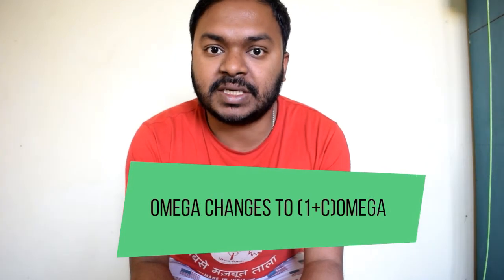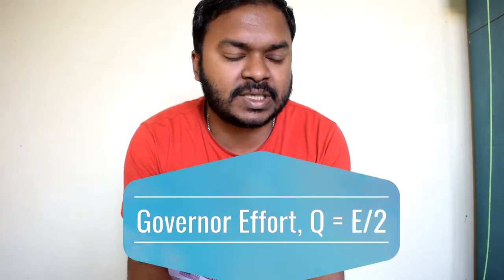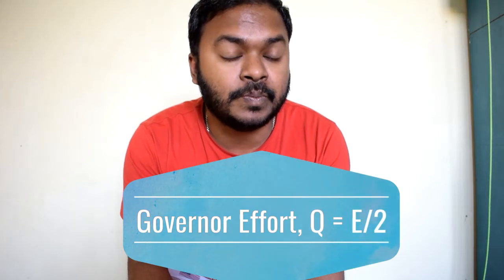In this derivation, we will equate the two equations of height even after increment of speed from ω to (1+C)ω. Since the height remains the same even after increment of the speed, we will equate the equation and try to find out the governor effort equation Q in terms of E/2. Since Q equals E/2, we will try to find out the expression for this capital E that is the downward force, thereby finding the expression of governor effort.